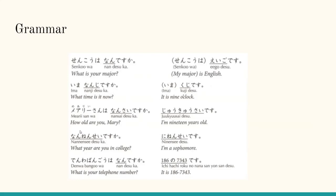Mary-san wa nansai desu ka would mean how old are you, Mary? Juukyuusai desu would mean I am 19 years old. Nannensei desu ka would mean what year are you in college? Ninensei desu would mean I am a sophomore. Denwa bangou wa nan desu ka would mean what is your telephone number? Ichi-hachi-roku no nana-san-yon-san desu would mean it is 186-7343.